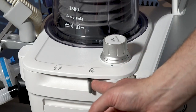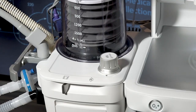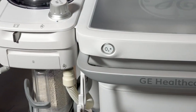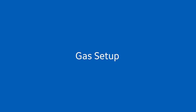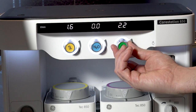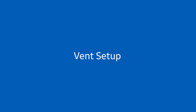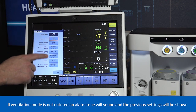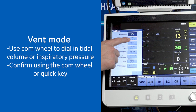Mechanical ventilation begins by moving the bag to vent switch to the vent position. Ventilation will begin at the previous configured or default settings. If needed, press the O2 flush button to inflate the bellows. To set your flow rate, adjust the oxygen and air flow knobs. To change the vent mode, select mode to choose the appropriate ventilation mode for the patient. Use the comm wheel to dial in the tidal volume or inspiratory pressure and confirm by using the comm wheel or by the quick key.